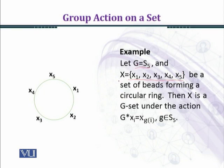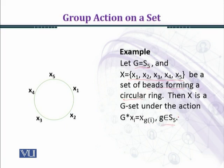When G is acting on X, the set of beads forming a circular ring — یہ capital X جو ہے یہ set of beads ہیں جو figure میں show کی ہوئی ہیں: x1, x2, x3, x4, x5 ایک circular ring بنا رہی ہیں as shown in the figure. Then X is a G-set under the action g★xi = x_{g(i)}, where g belongs to S5. جب کوئی permutation xi پہ act کرے گی تو image XGI مل جائے گی۔